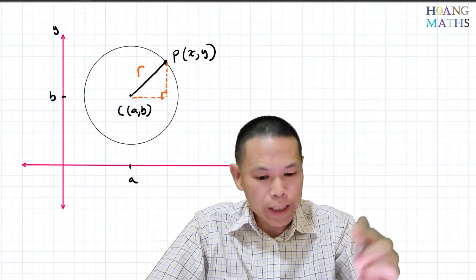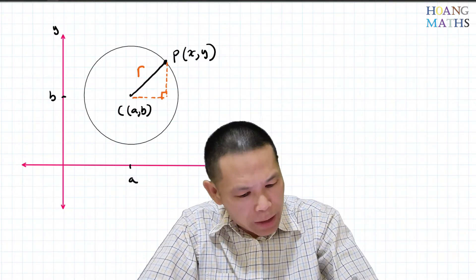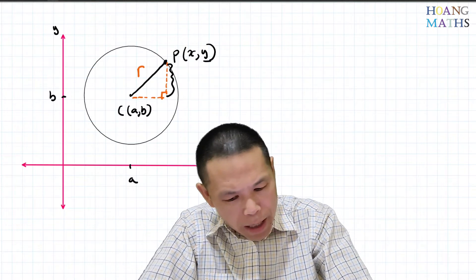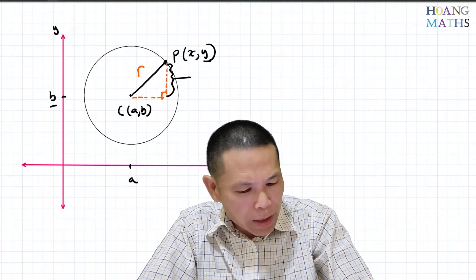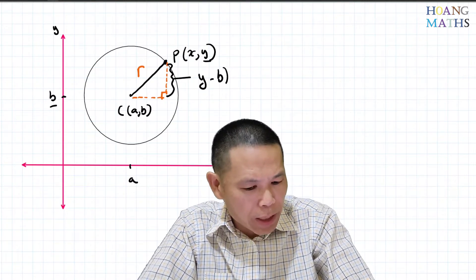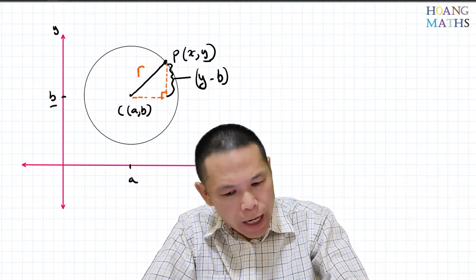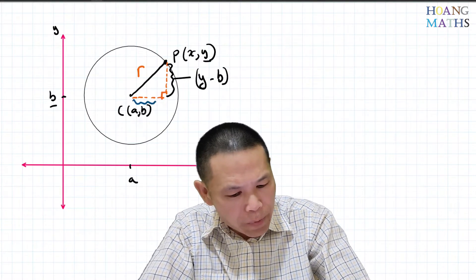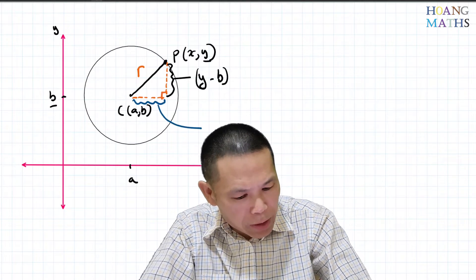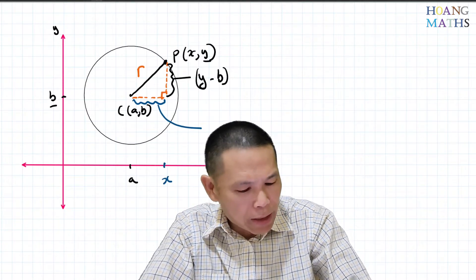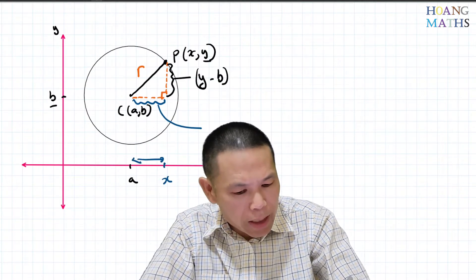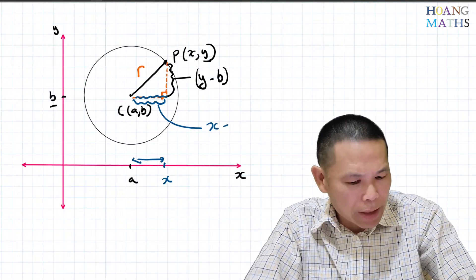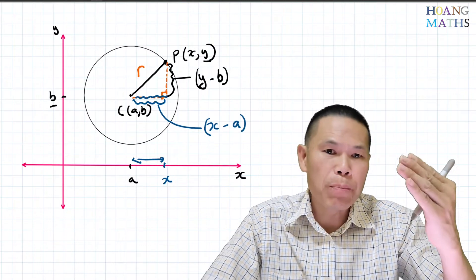To find the radius, we know that this vertical distance here is equal to y minus b. And to find this horizontal distance here — because this point is x — the distance from here to here is x minus a.